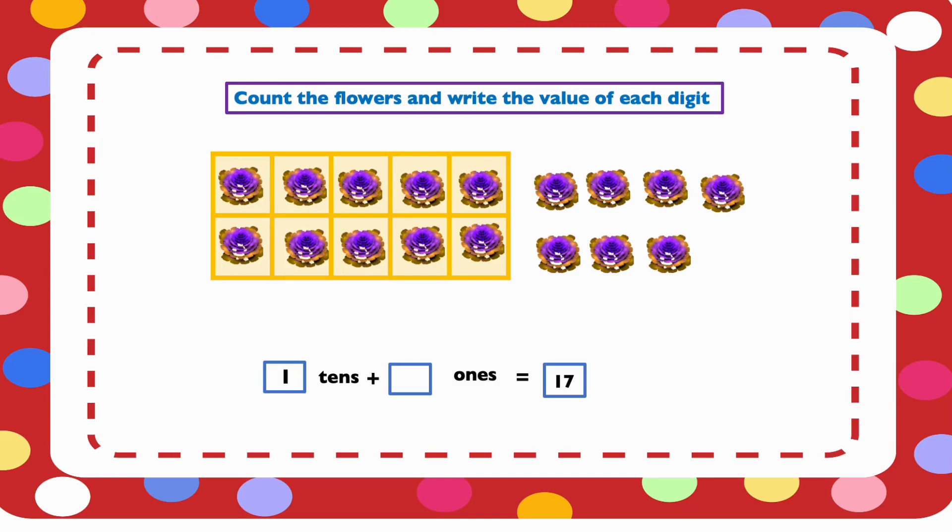And then we count the remaining: 1, 2, 3, 4, 5, 6, 7. 7 is not up to 1 group. Each group is 10. So 7 will be under ones. So 17, 1 in 17 is 1 ten and the 7 is 7 ones.